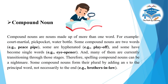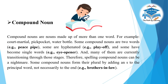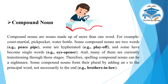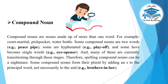Compound noun: Compound nouns are nouns made up of more than one word — for example: court-martial, pickpocket, water bottle. Some compound nouns are two words, for example: peace pipe; some are hyphenated, for example: playoff; and some have become single words, for example: eye-opener. Many of them are currently transitioning through those stages, so spelling compound nouns can be a nightmare. Some compound nouns form their plural by adding an S to the principal word — for example: brothers-in-law.